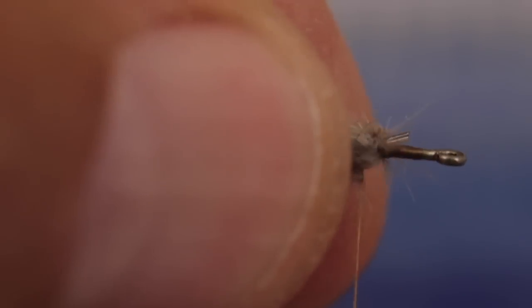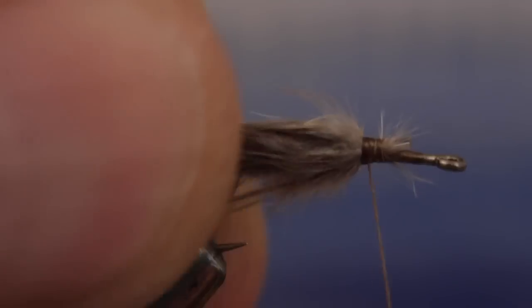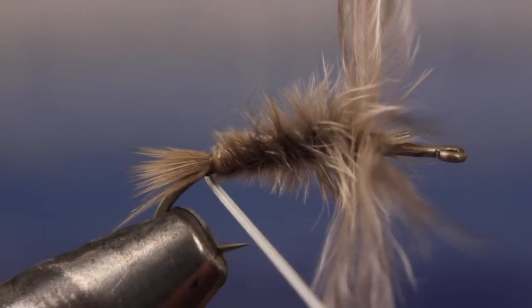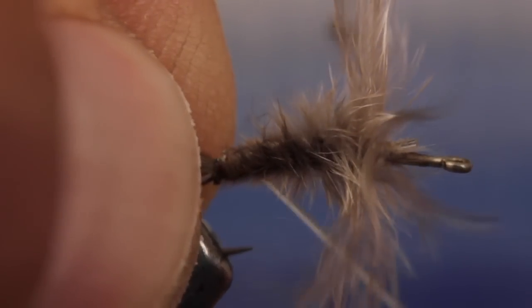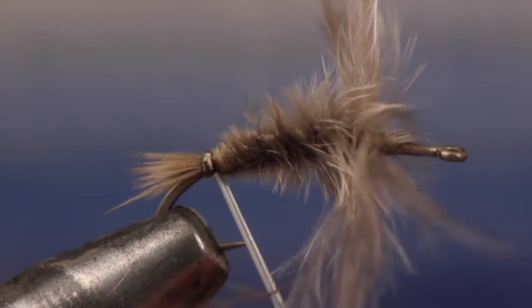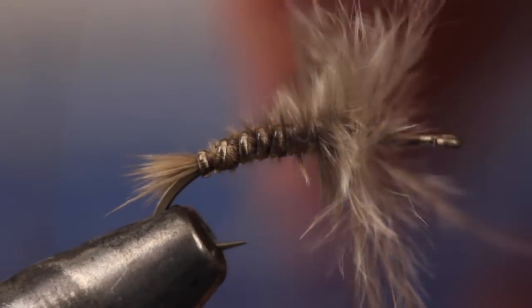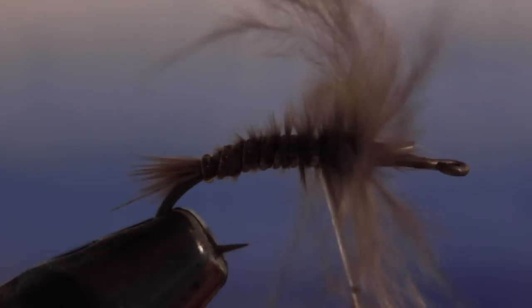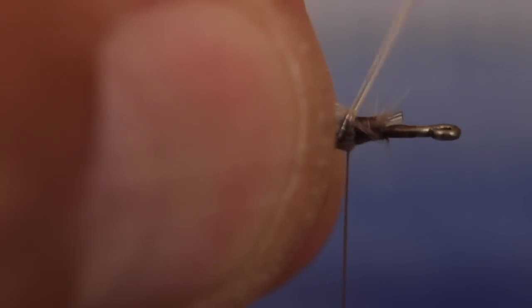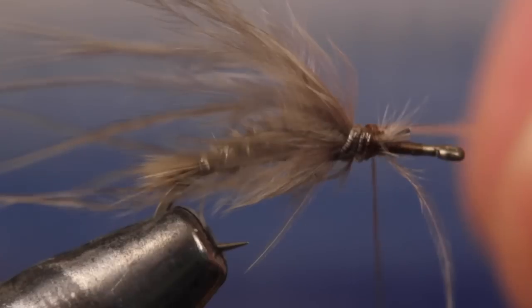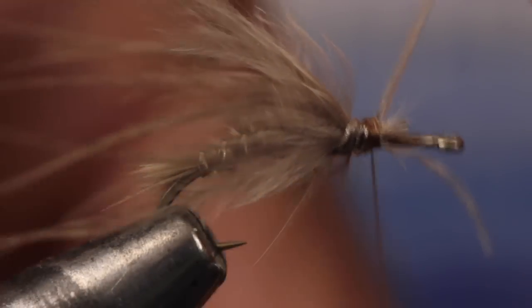Sweep the Chickaboo fibers back and take a few wraps rearward to coax them in that direction. With this done, pull the fibers forward to expose the abdomen of the fly. Get hold of the clear rib and begin making open spiral wraps up the hook shank. You want to stretch the material quite a bit while you're doing this. When you reach the longer Chickaboo fibers, once again sweep them rearward and bring the rib through them to the front.